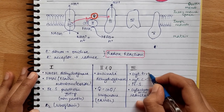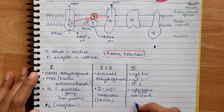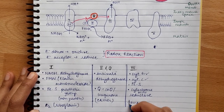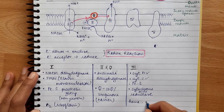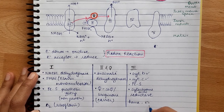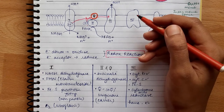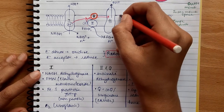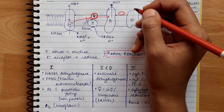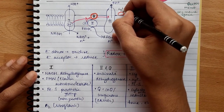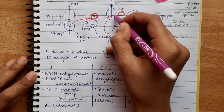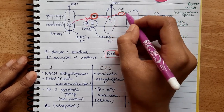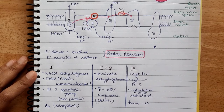The Cytochrome B and C proteins contain Heme groups — similar to hemoglobin, but instead of holding oxygen they hold on to electrons. There is also an electron carrier known as Cytochrome C which accepts the electrons from Complex 3 and transfers them to Complex 4.